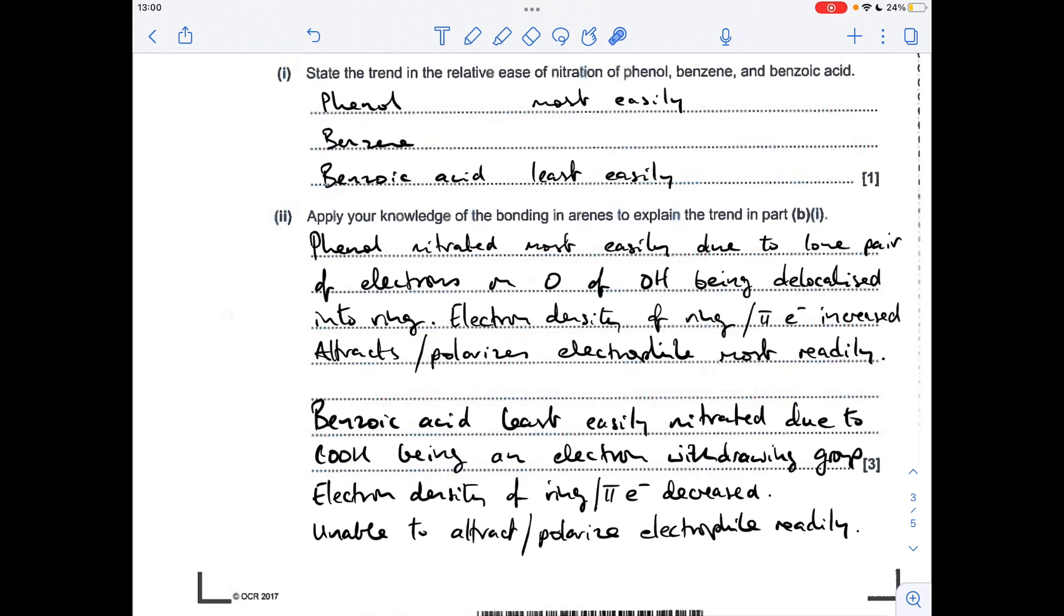Moving on to benzoic acid, why is that the least easily nitrated? Because the COOH group is an electron-withdrawing group. So the electron density of the ring, or the pi electron density, is decreased, and therefore it's unable to attract or polarise electrophiles readily.